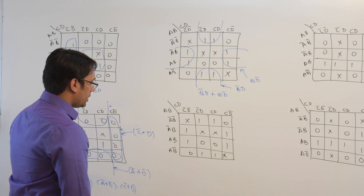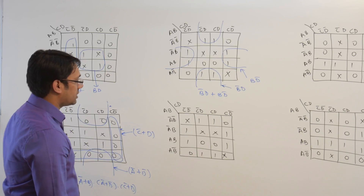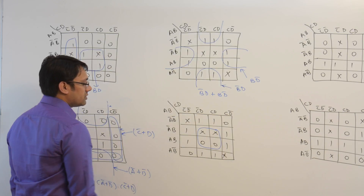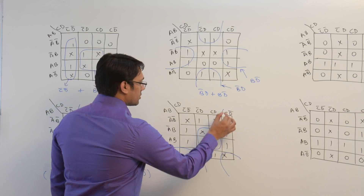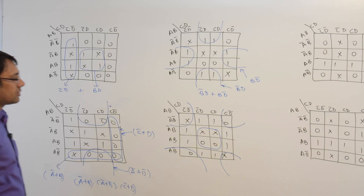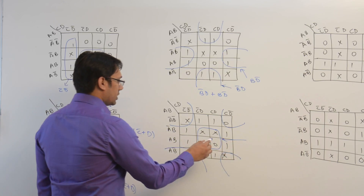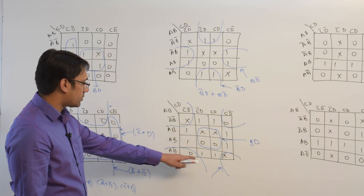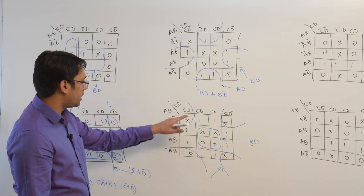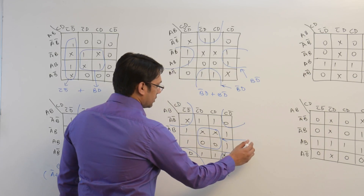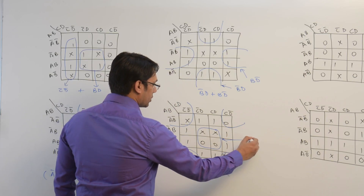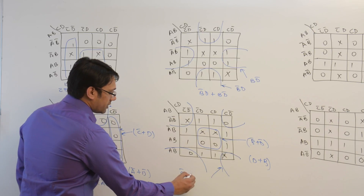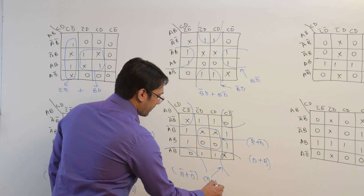Now let us look at the fourth K-map. In this K-map, we want to find the POS expression. We can make a subcube here and associate this don't care combination with 0. We can also make a subcube like this and another subcube like this. This inner subcube is representing B plus D, and the outer subcube is representing B complement plus D complement. Therefore, the solution equation will be (B complement plus D complement) dot (B plus D).